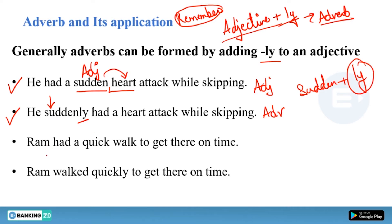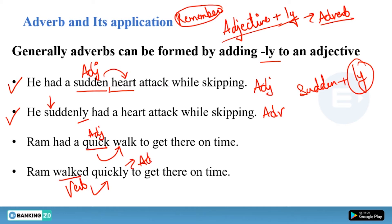Similarly, 'Ram had a quick walk' — here 'quick' is an adjective modifying the noun 'walk.' But 'Ram walked quickly' — here 'quickly' is modifying the verb 'walk,' which is why it is an adverb.